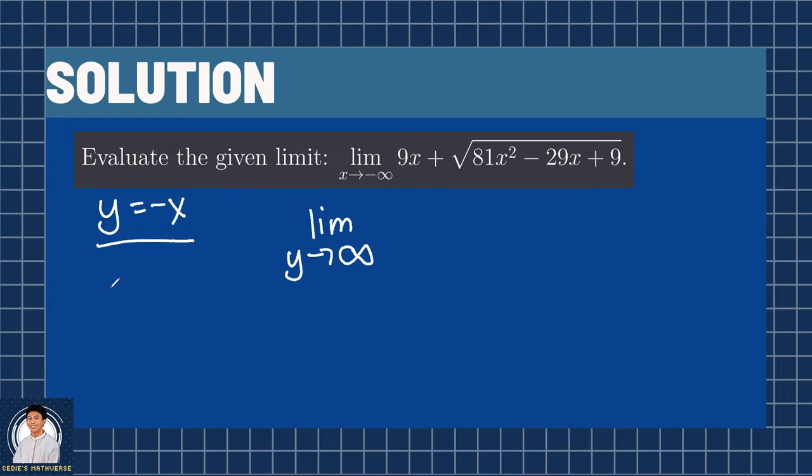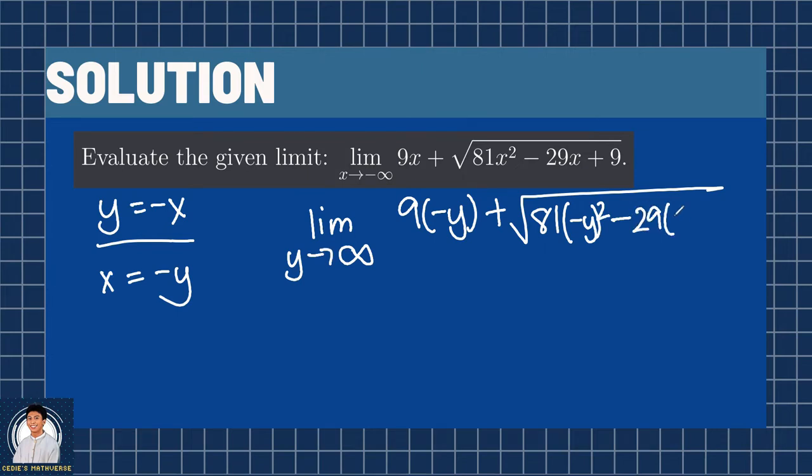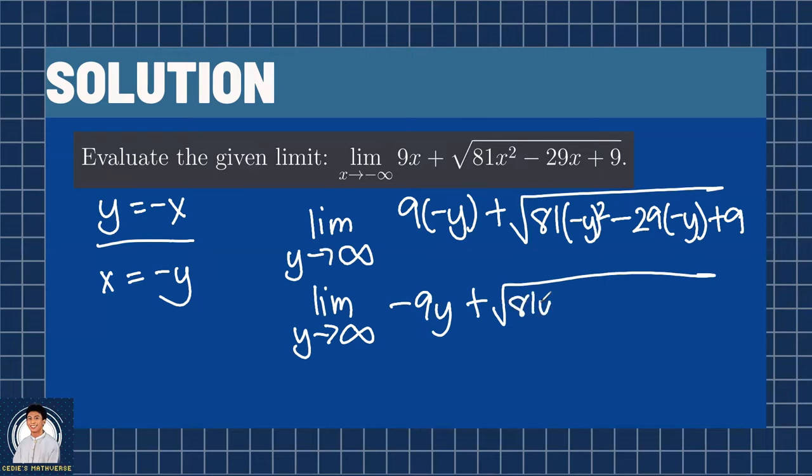Since y equals negative x, we can say that x equals negative y. All of the x here will be substituted into negative y. So 9 times negative y plus the square root of 81 multiplied by negative y squared minus 29 multiplied by negative y plus 9. The limit becomes negative 9y plus the square root of 81y squared plus 29y plus 9.